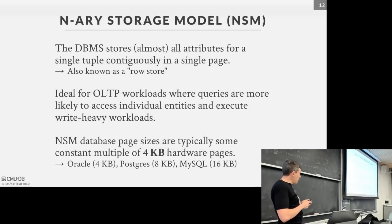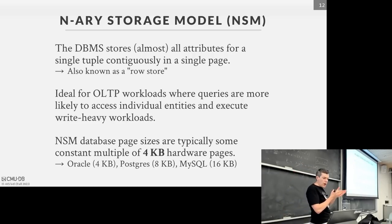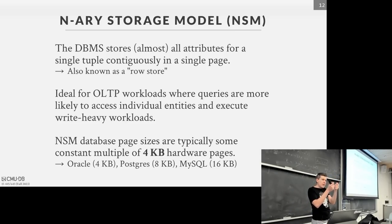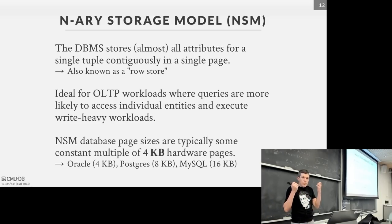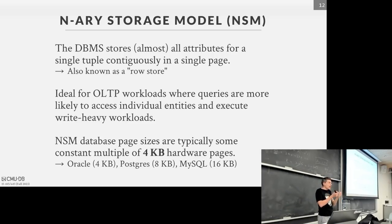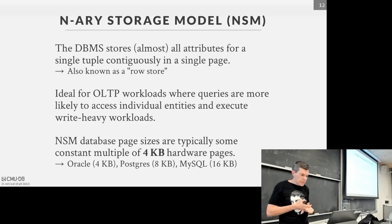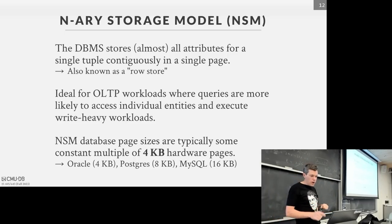The NSM row store is what we've assumed so far this semester: almost all attributes for a given tuple are stored contiguously in a single page, one attribute after another. You lay out all the data for a given tuple before moving to the next one. This is better for OLTP systems because all the data is contiguous.